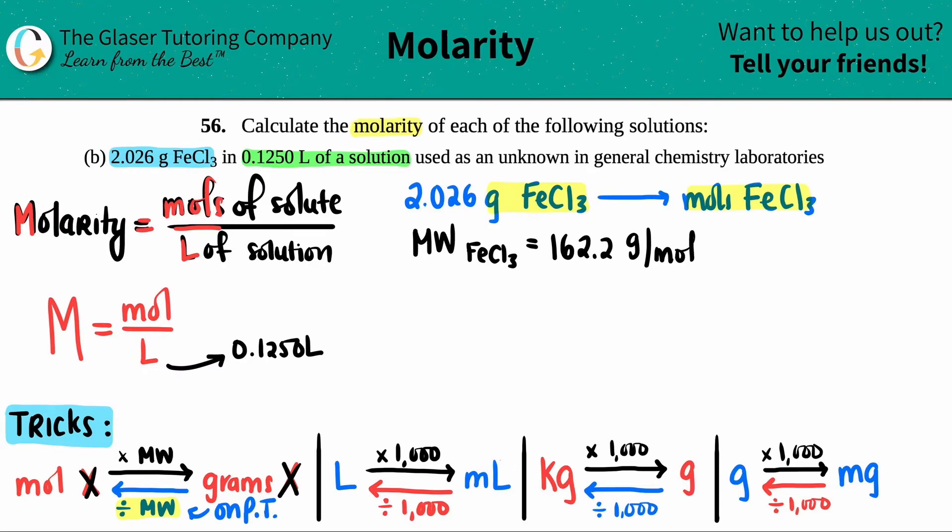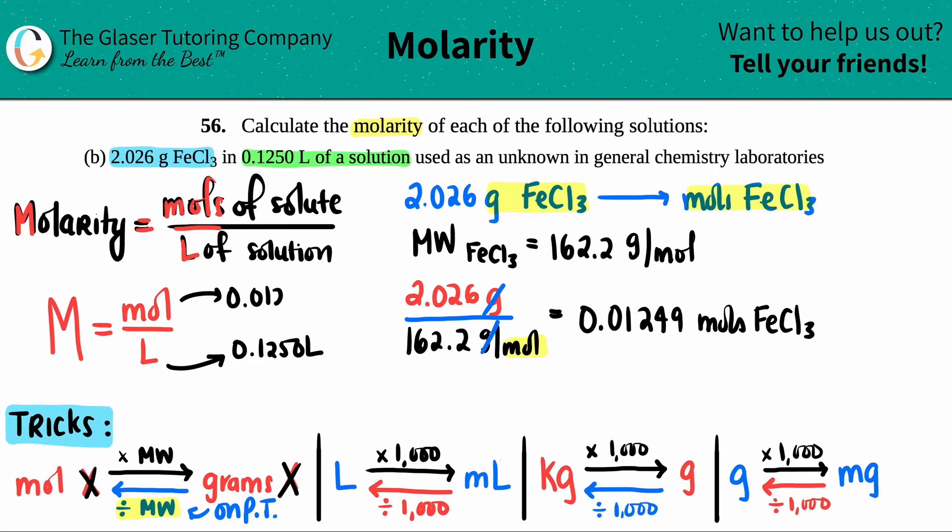Now we can proceed. I take that gram, divide by the molecular weight, and voila, I end up at moles. I'm going to take the 2.026 because that was the grams that I had, and now I'm going to divide it by the molar mass or molecular weight that I just found out: 162.2. If I play the unit game, you see how grams cancel out with grams and we're only left with the unit of mole. Let's see what we get: 2.026 divided by 162.2, I got four sig figs, so 0.01249 moles of FeCl3.